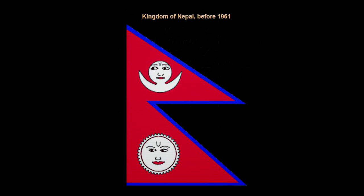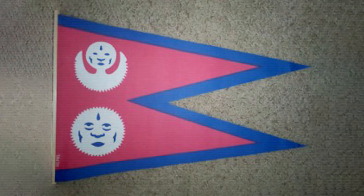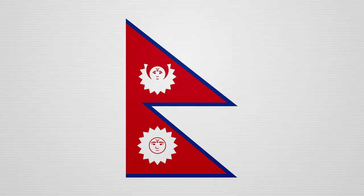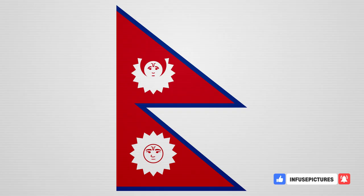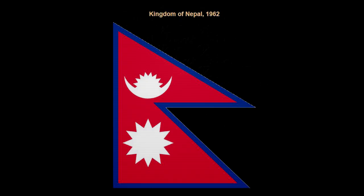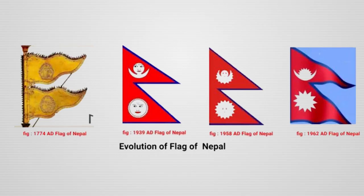The Kingdom of Nepal is the only country in modern times with a non-rectangular flag. It is a combination of two triangular pennants and the final shape is of two overlapping right triangles. The smaller upper triangle displayed a moon symbol symbolizing the king, and the larger lower triangle displayed the sun symbolizing the Rana family, whose hereditary prime ministers held the real power behind the throne until 1961. The flag's color is crimson red — the national color and symbol of bravery — while the border is blue, the color of peace. The shape of the sun and moon symbols was not standardized and could look different.